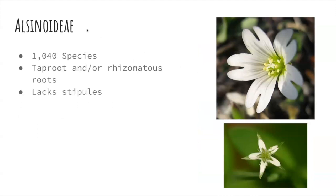The last subfamily, Paronychioideae, is the second largest, containing 1,040 species. It lacks stipules and has taproot and rhizomatous roots.